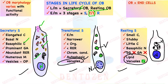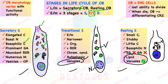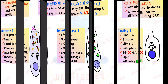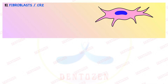Odontoblasts are end cells — they cannot divide and have lost the ability to divide. So if these cells die and new odontoblasts are needed, they will come from undifferentiated mesenchymal cells differentiating from the cell-rich zone. That can be an important viva question.